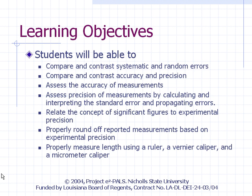Upon completion of the laboratory activity associated with this movie, students will be expected to compare and contrast systematic and random errors, compare and contrast accuracy and precision, assess the accuracy and precision of measurements by calculating and interpreting the standard error and propagating errors, relate the concept of significant figures to experimental precision, properly round off reported measurements, and properly measure length using a ruler, a vernier caliper, and a micrometer caliper.